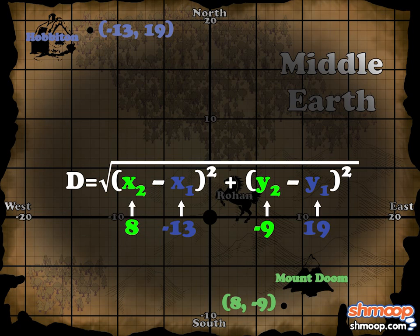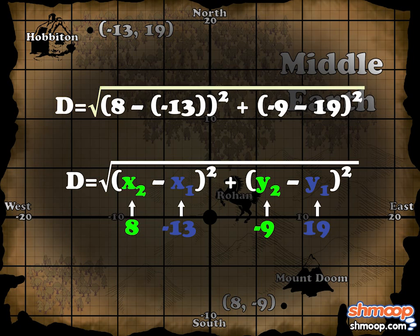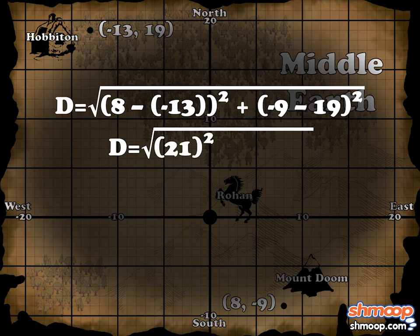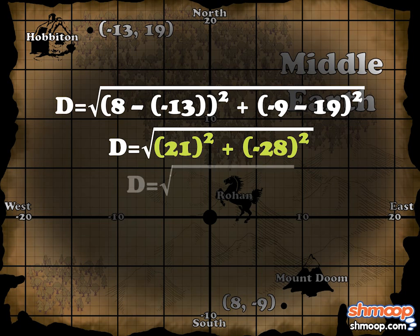If we plug these numbers into our formula, we get d equals the square root of eight minus negative 13 squared plus negative nine minus 19 squared. We can simplify inside the parentheses first. Eight minus negative 13 equals 21, and negative nine minus 19 equals negative 28. Remember that subtracting a negative is the same as adding a positive. So d equals the square root of the quantity 21 squared plus negative 28 squared.